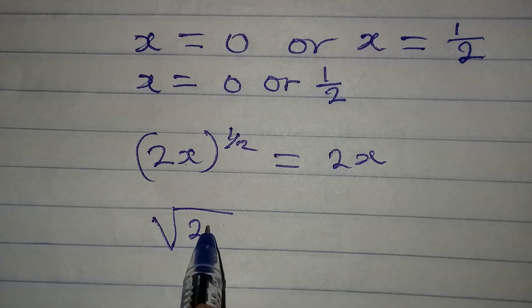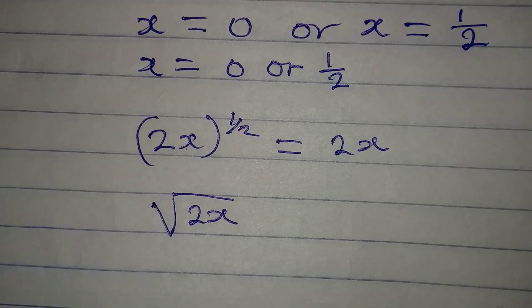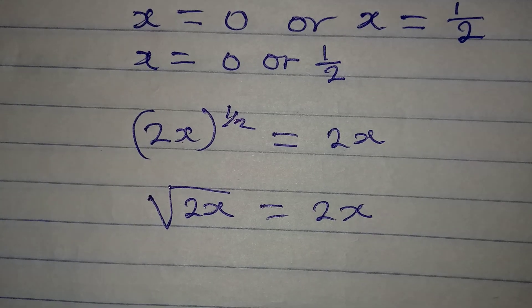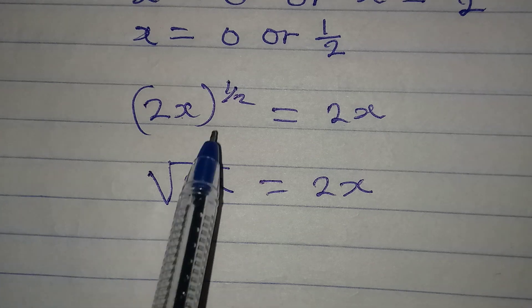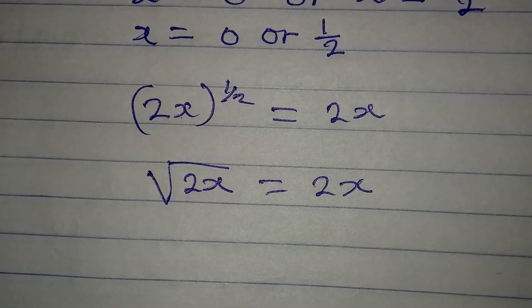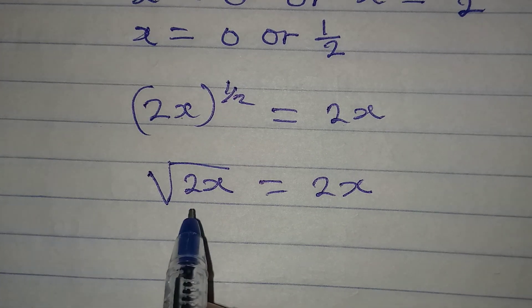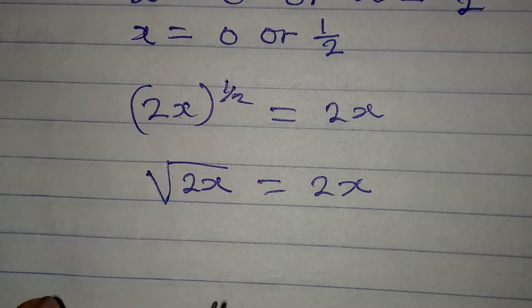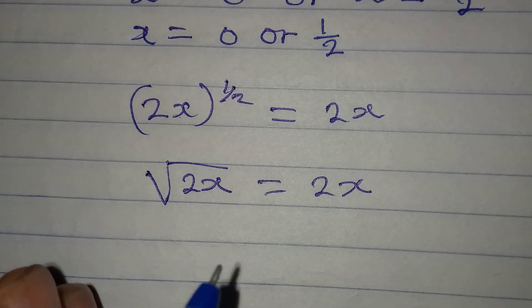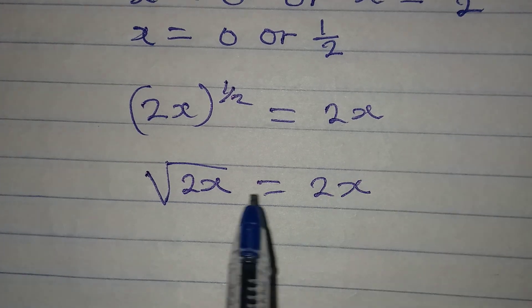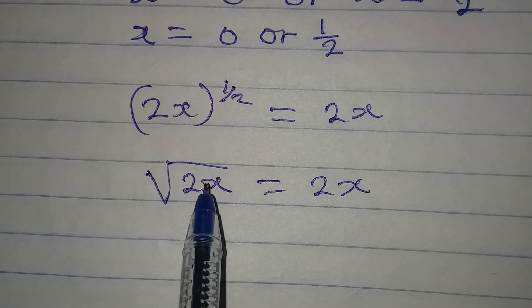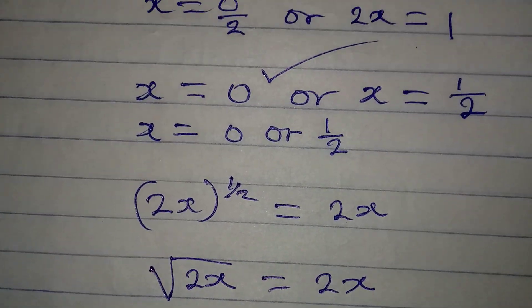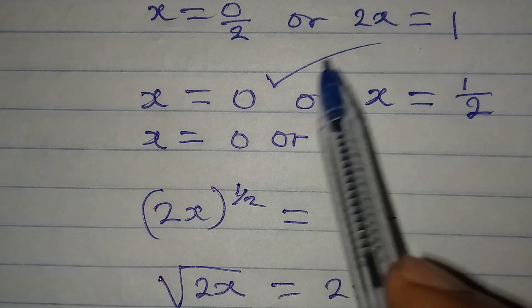Don't forget that anytime you have anything raised to the power of 1 over 2, it is the same as the square root of that thing. So we have square root of 2x, which will be equal to 2x. If we put 0 here, automatically we will have the same thing on both the left-hand side and the right-hand side, meaning that x to be equal to 0 is correct, as it satisfies the given equation.